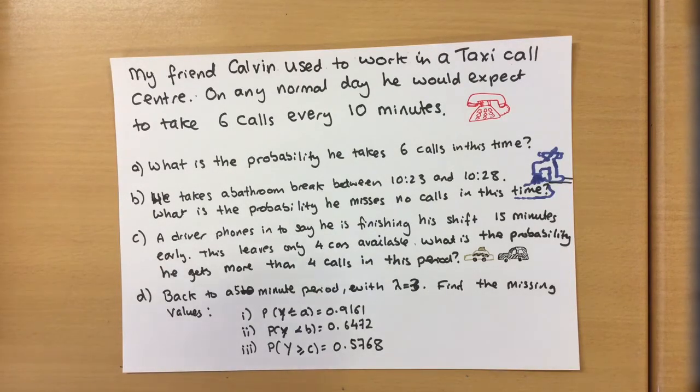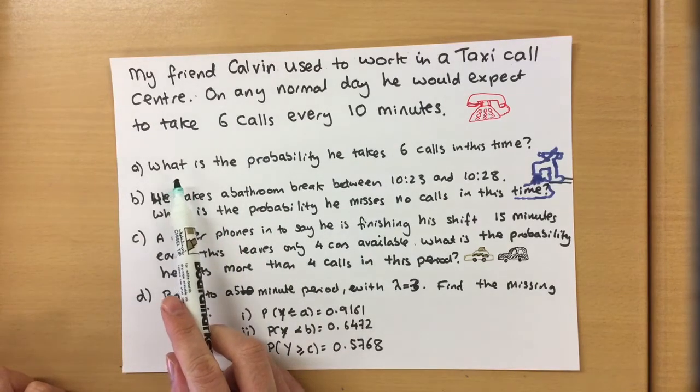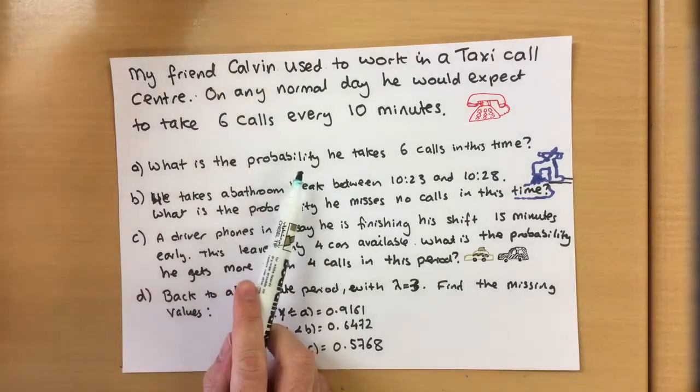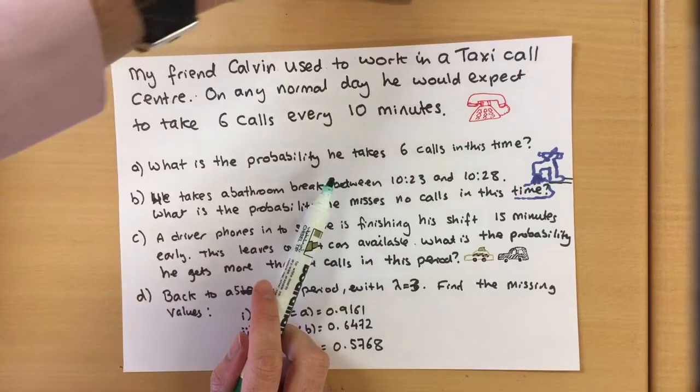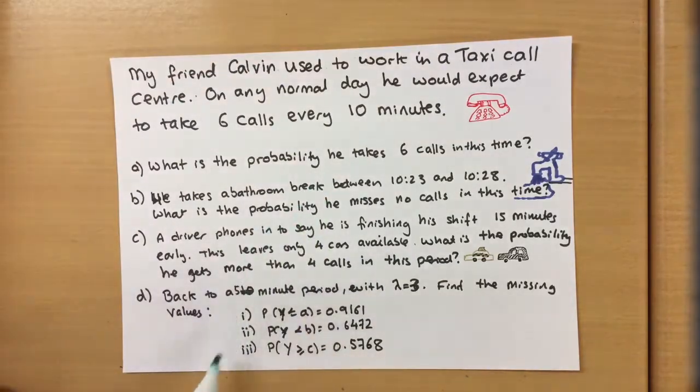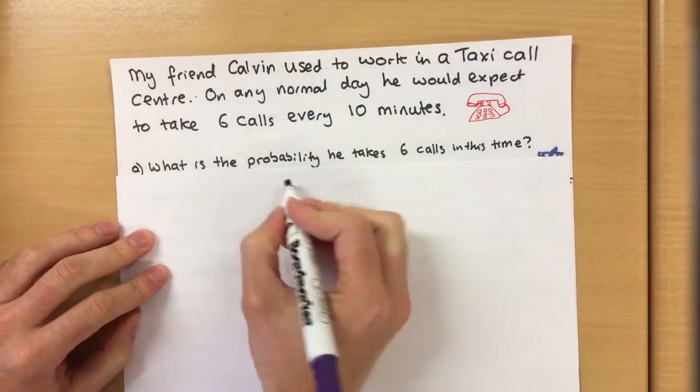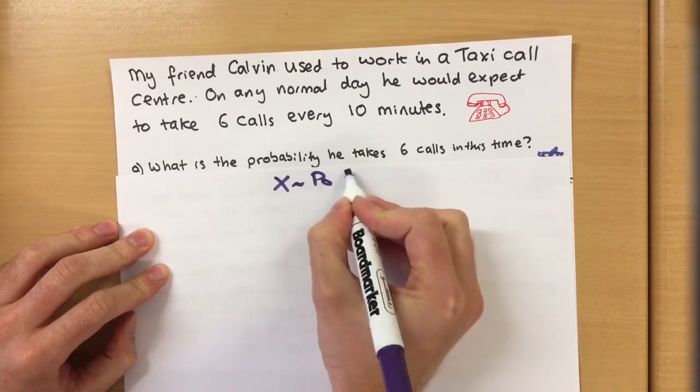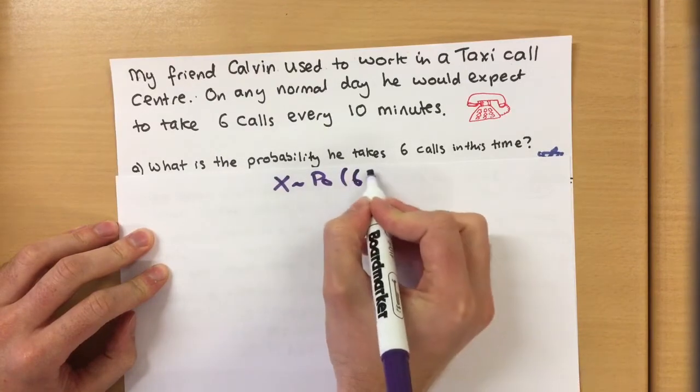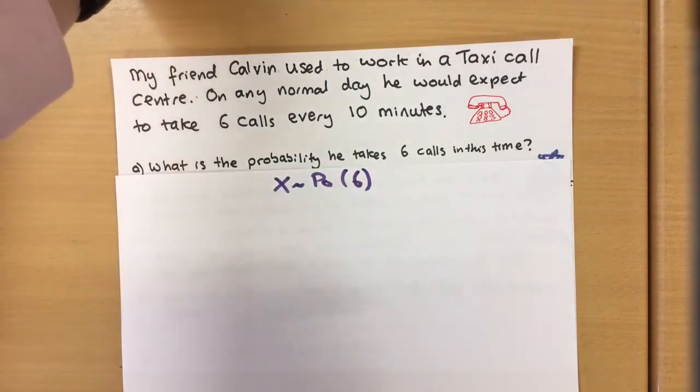On any normal day he would expect to take six calls every ten minutes. Similar that our mean is also called the expected value as well. So now what is the probability in the first question that he takes six calls in this time? Well our distribution...